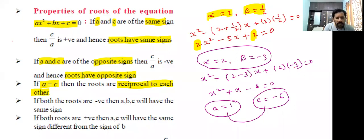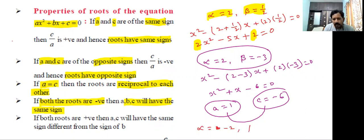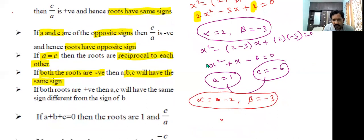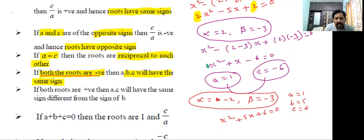If both roots are negative, then a, b, and c will all have the same sign. For example, take alpha = -2 and beta = -3. Forming the quadratic equation gives x² + 5x + 6 = 0. Here a = 1, b = 5, and c = 6 — all have the same sign, confirming that when both roots are negative, a, b, c have the same sign.